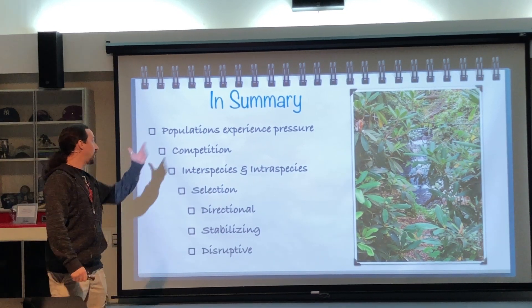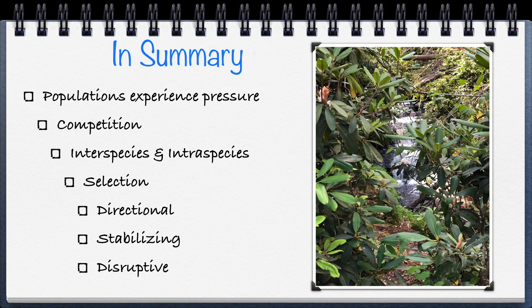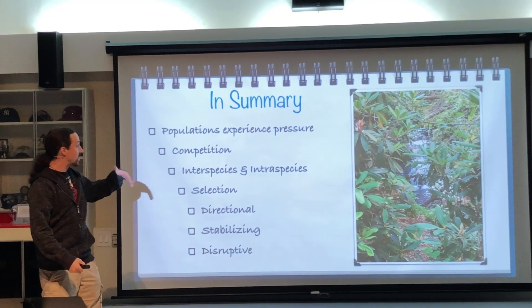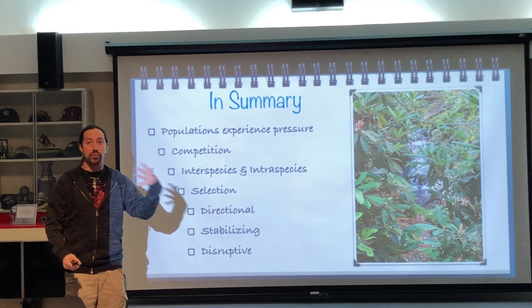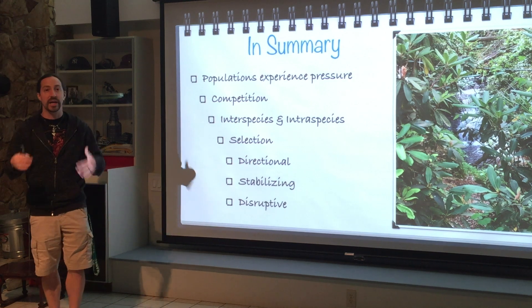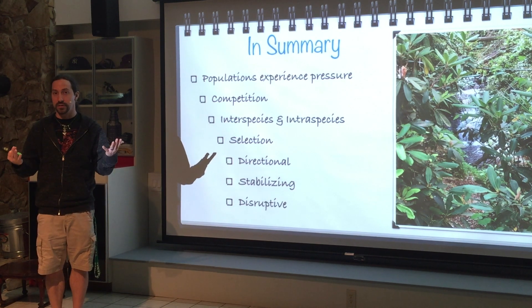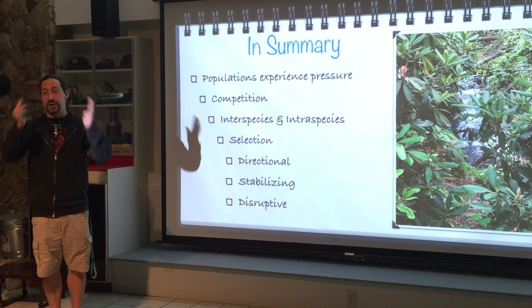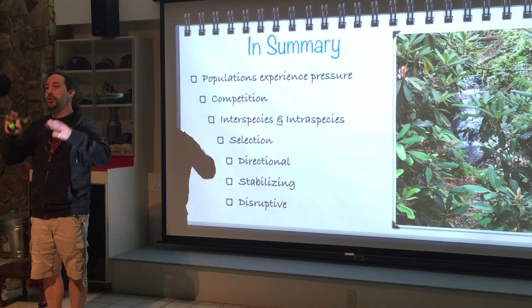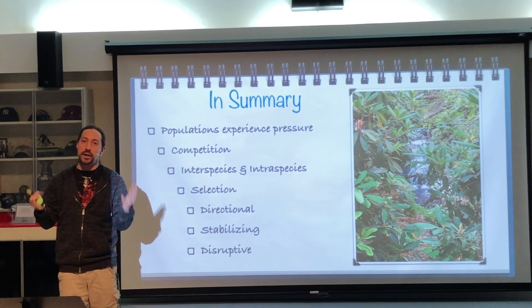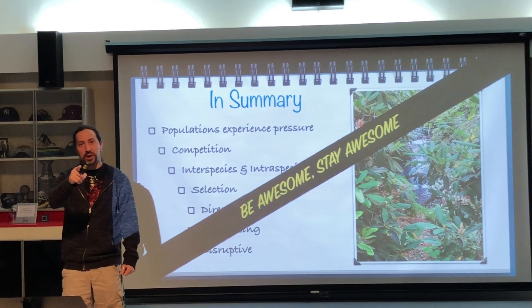In summary, populations experience selective pressure — they can't avoid it. This pressure comes from within their own species and from other species, competing for resources, avoiding being food, or seeking food. Selection occurs because of these pressures and competition. It will either be directional selection where one extreme is favored, stabilizing selection where the average is favored, or disruptive selection where two extremes are favored and the average is disfavored. That's it for this time — be awesome, stay awesome.